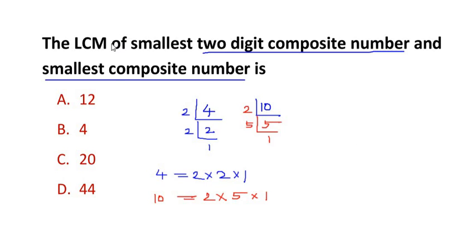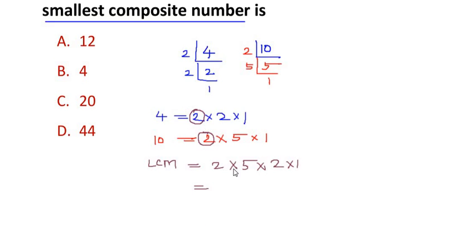To find the LCM of these two numbers, we are going to circle out the common numbers between the two, that is 2. It is common, so in the LCM we are going to write the common number only once. And all non-common numbers I am going to multiply with the common number, so 5 times 2 times 1. Here we get 2 times 5 is 10, and 10 times 2 is 20. So the LCM of 4 and 10 is 20.